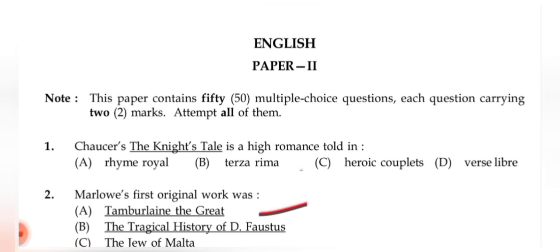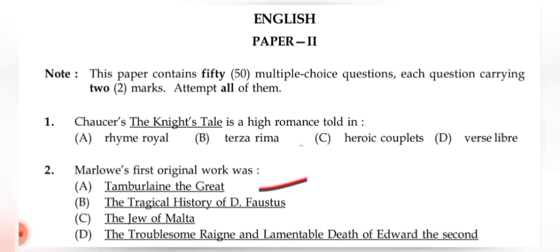Hello viewers, welcome back. I will resume the series for MA in English entrance test. This question paper consists of 50 questions, each carrying two marks — 100 marks total. Question 1: Chaucer's 'The Knight's Tale' is a high romance told in what form? Options: (A) rhyme royal, (B) terza rima, (C) heroic couplets, (D) vers libre. The correct answer is (C) heroic couplets. Please verify all answers I give here.